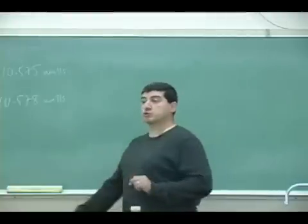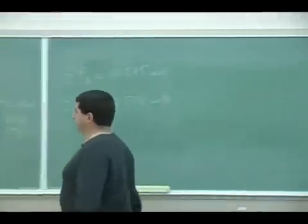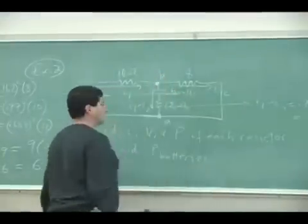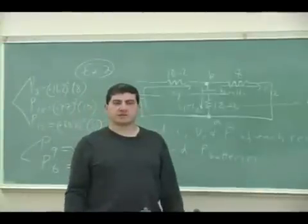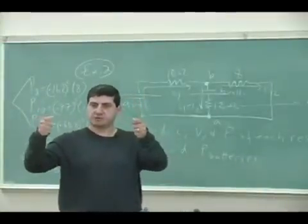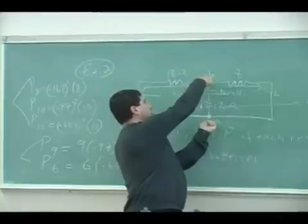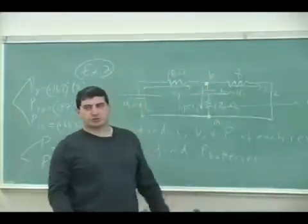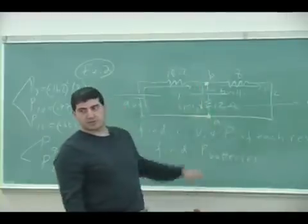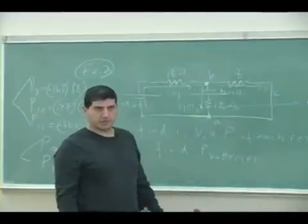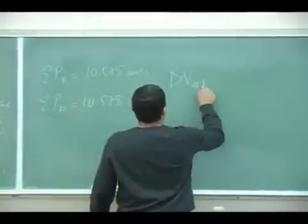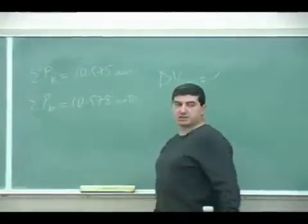Now, the problem could also ask a question such as this. It could give you a point A and a point B, and say, what's the potential difference between point A and B? In other words, if I were to take a voltmeter and put it across those two points, what would the voltmeter read? And which point is at a higher potential, A or B? So, what's delta VAB?